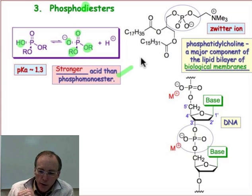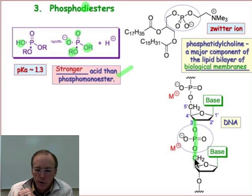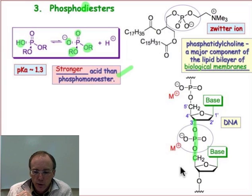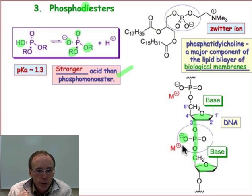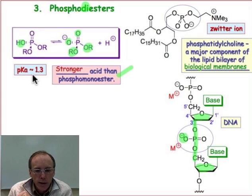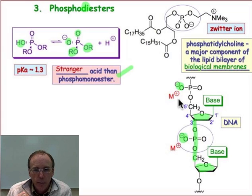We've encountered phosphodiesters when we talked about nucleic acids. There you can see the structure of DNA. The two organic constituents are the two different ribose rings that are linked together through that phosphodiester linkage. We talked about DNA and RNA as being polyanionic, and the reason is that proton is never usually bound to that oxygen — being so acidic, it's almost always lost and forms the polyanionic backbone of nucleic acids.